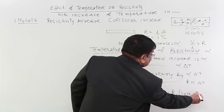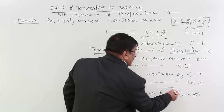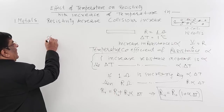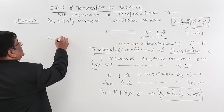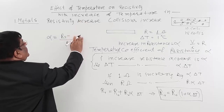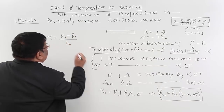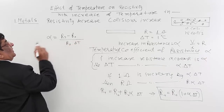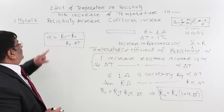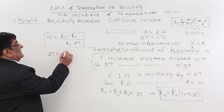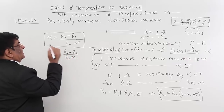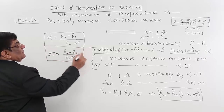With help of this formula, you can find out any related formula. If you want to find alpha, then alpha equals (R_T minus R₀) divided by (R₀ into ΔT). That is the rise in temperature. Similarly, delta T equals (R_T minus R₀) divided by (R₀ into alpha). Once you understand the basic concept, you can make the formula for new resistance, for alpha, or for delta T from a single relation.